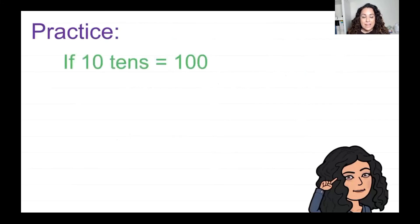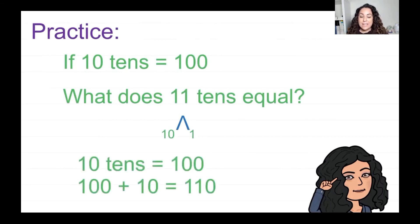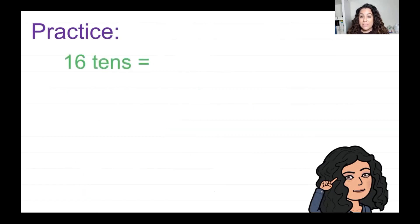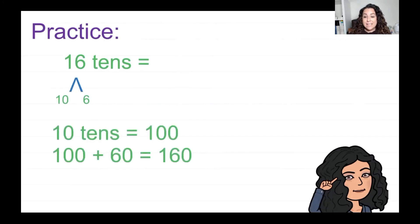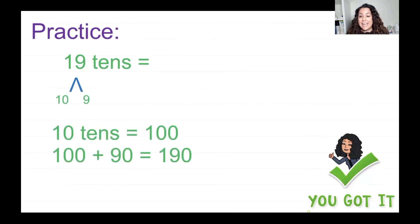Let's practice. If 10 tens is equal to 100, what does 11 tens equal? I'll decompose 11 into 10 and 1. So 10 tens equals 100, and 100 plus that extra 10 equals 110. What about 16 tens? Decompose 16 into 10 and 6: 10 tens is 100, plus 6 tens gives 160. What about 19 tens? Decompose into 10 and 9: 10 tens is 100, plus 90 equals 190.